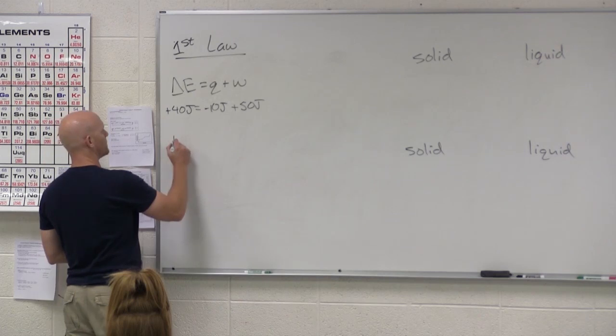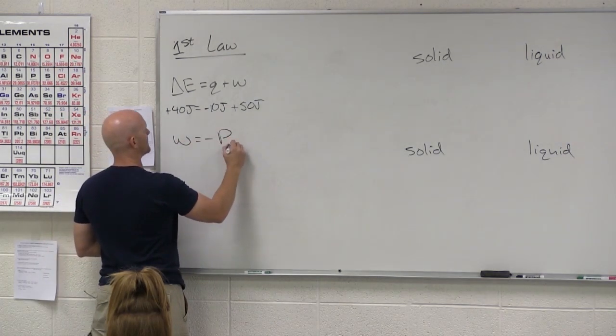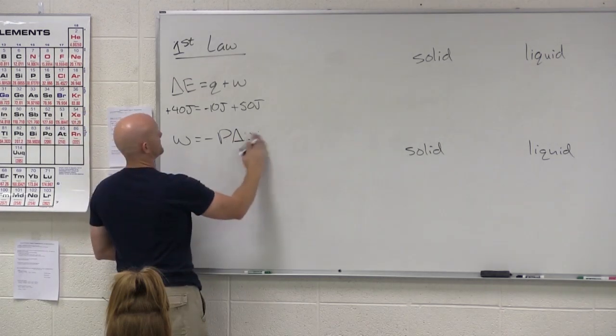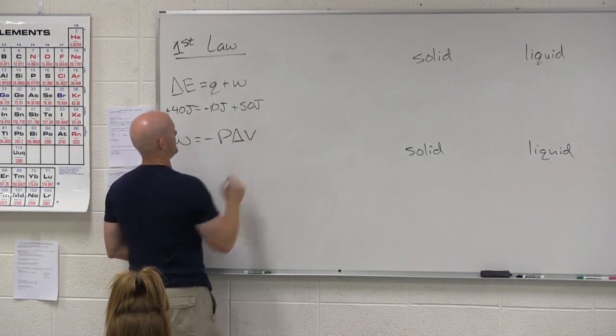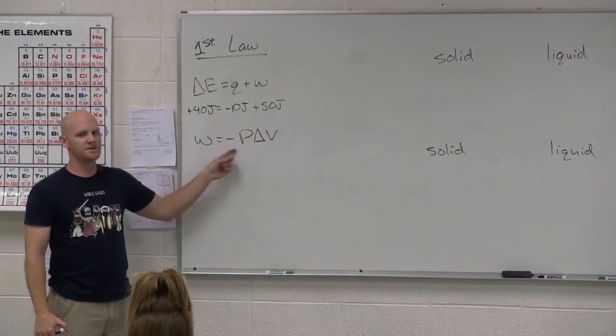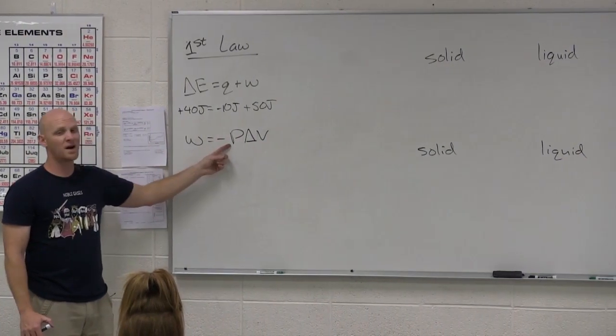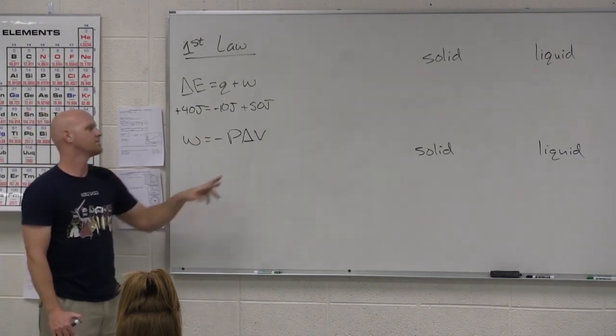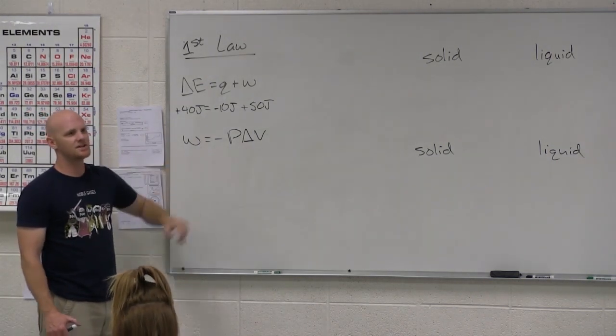The most common type of work we talk about is what we call PV work. And PV work has the formula negative P times delta V. P here is pressure. Pressure is always positive. There's no such thing as a negative pressure. Goes down to zero but no lower. And then delta V is the change in volume.